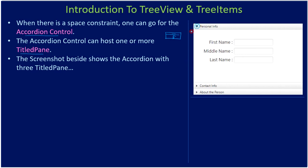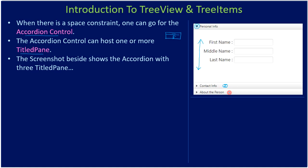The very first TitledPane is Personal Info, and it is hosting three controls in it. The down-pointing arrow shows that the Accordion control has expanded the TitledPane Personal Info. There are two more TitledPanes here — one is Contact Info and the other is About the Person — but these two panes are currently in a collapsed state.